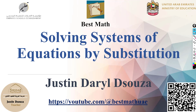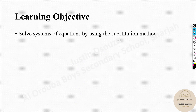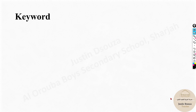Solving systems of equations by substitution, explained by Justin de Souza. The learning objective for this lesson is to solve systems of equations by using the substitution method. A system of equations — more than one equation — can be solved in various methods. In this lesson we will focus on the substitution method. The key word is substitution, which we will see in a moment.